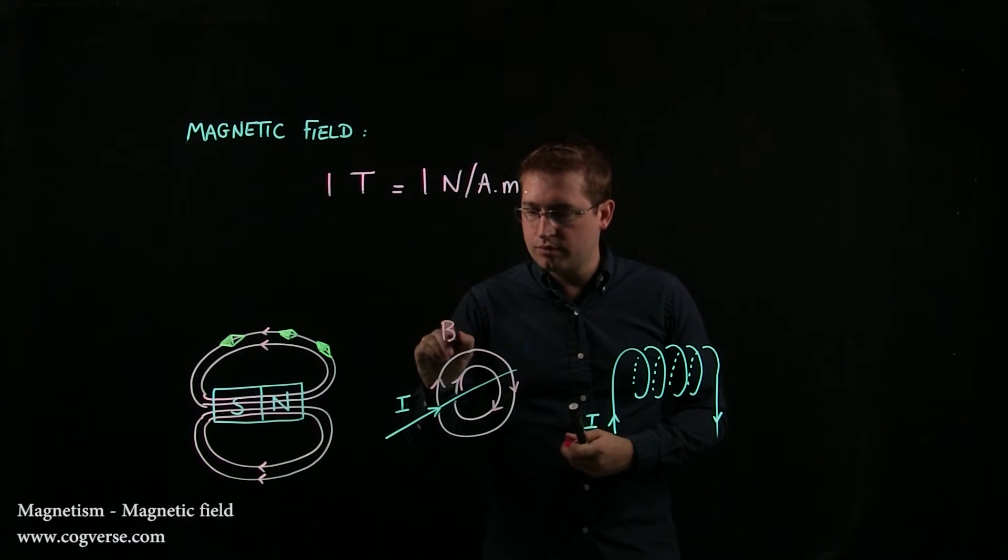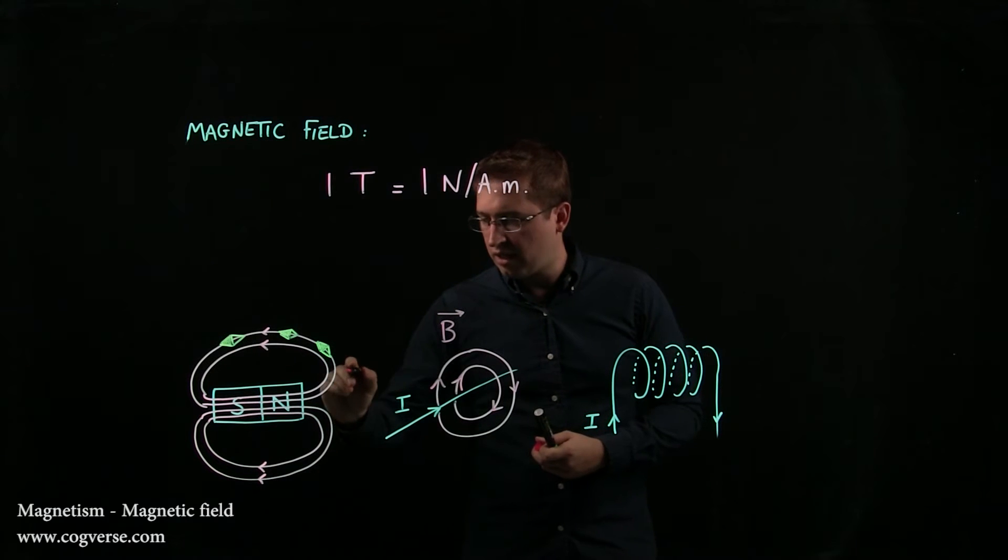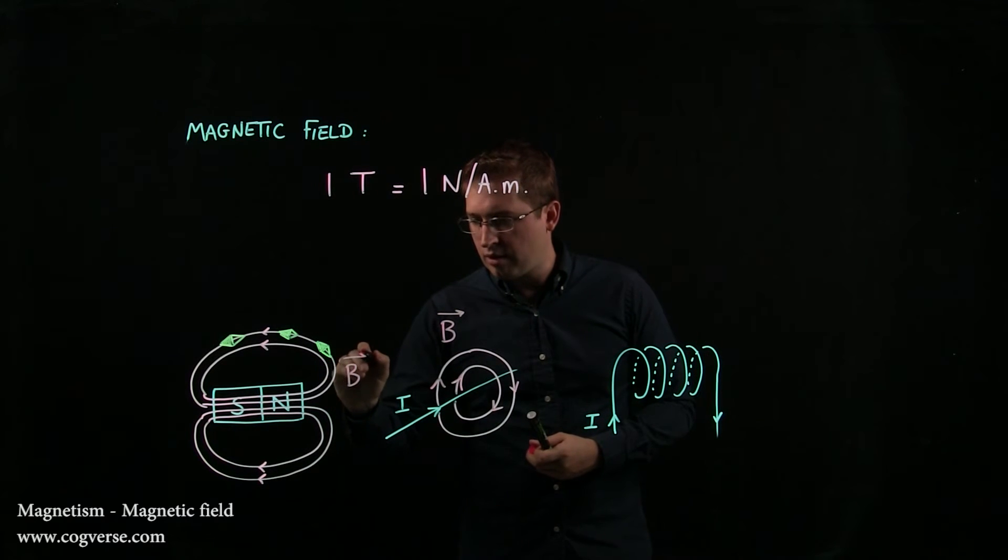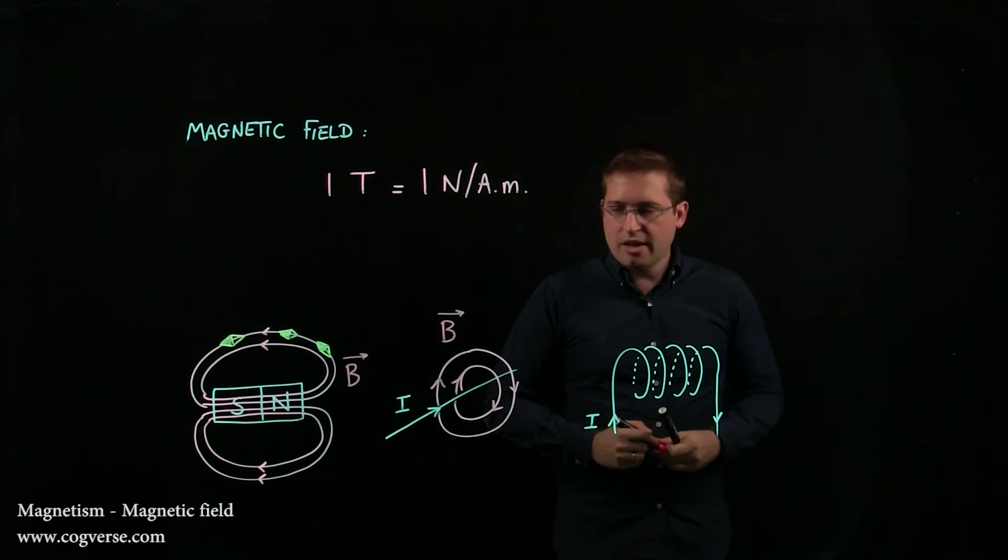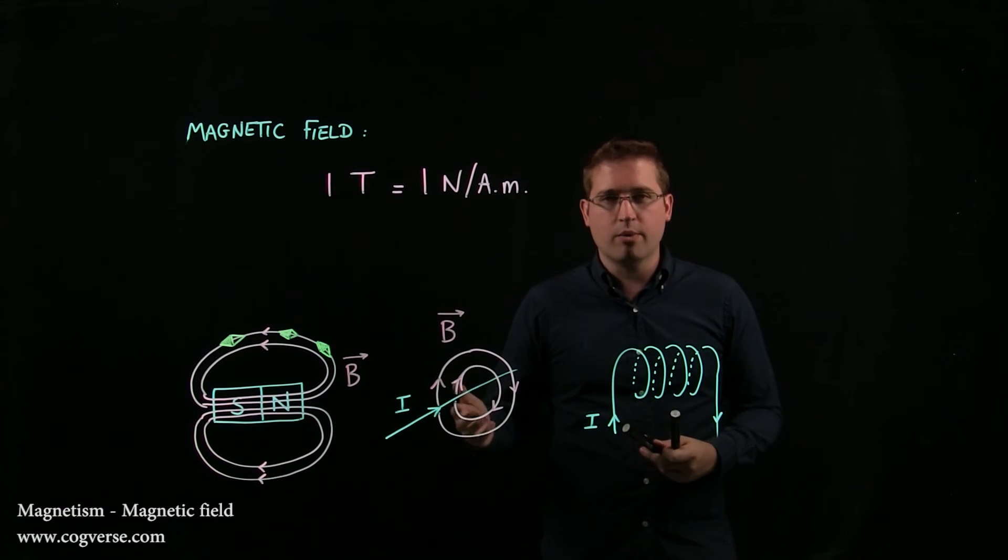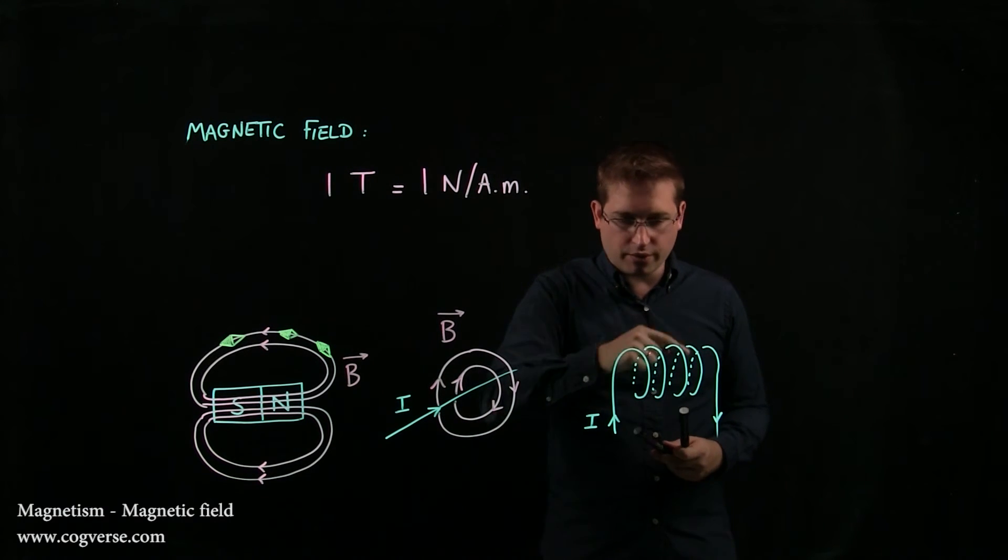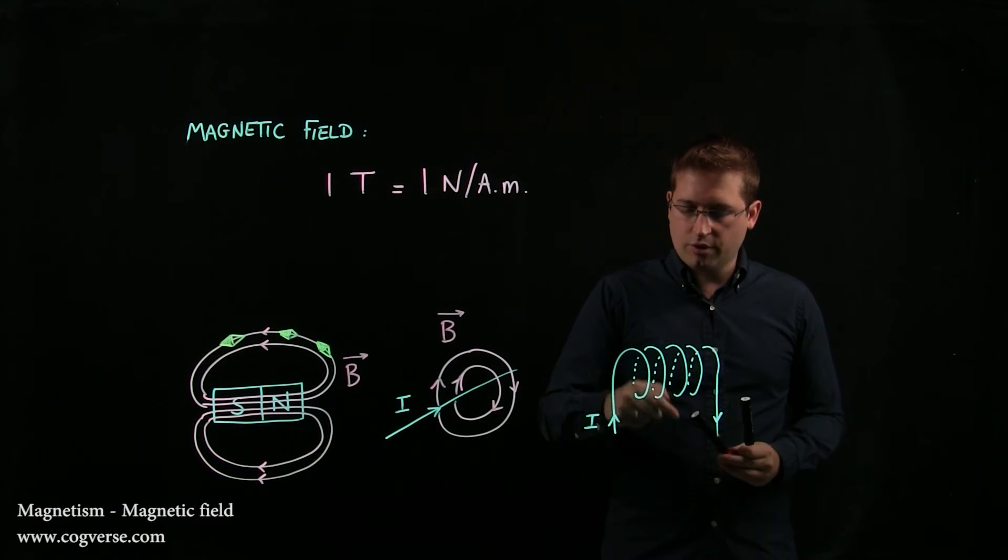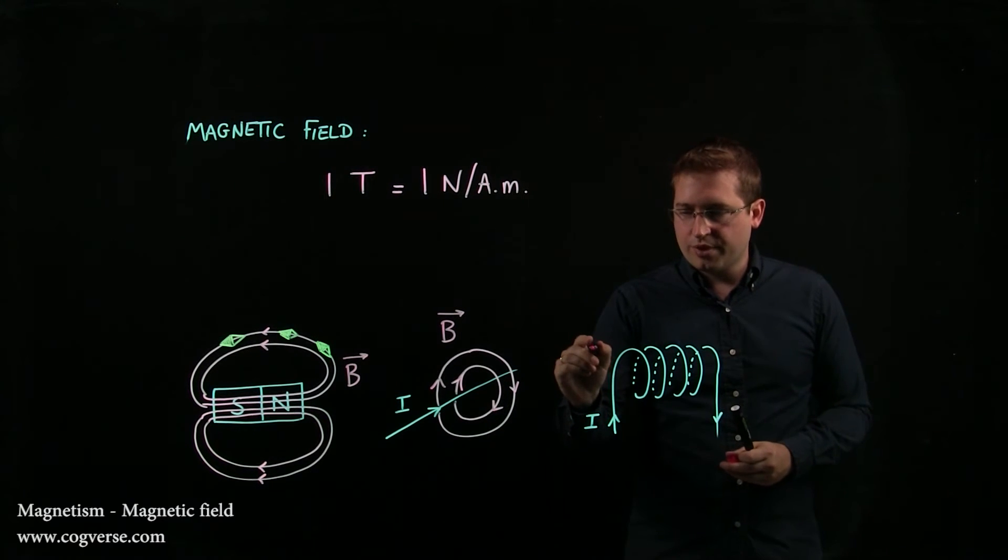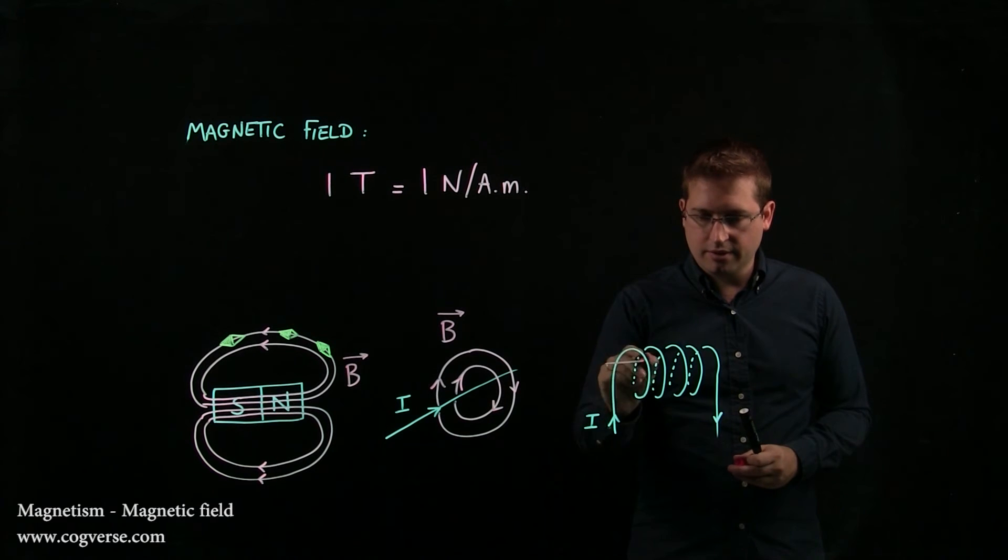And typically, we'll also denote the magnetic field by B. And finally, if you actually take your wire with the current and coil the wire and have the current flow through, you end up with magnetic field lines that look like this.